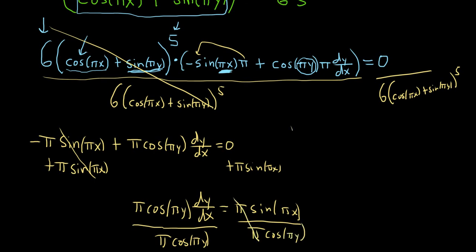The π's cancel. So what are we left with? We're left with dy/dx equals sine of πx over cosine of πy.